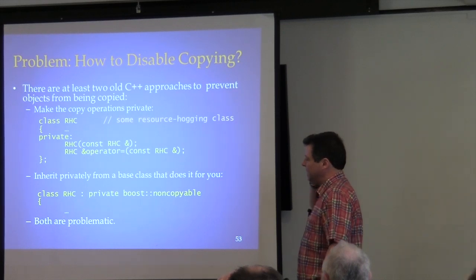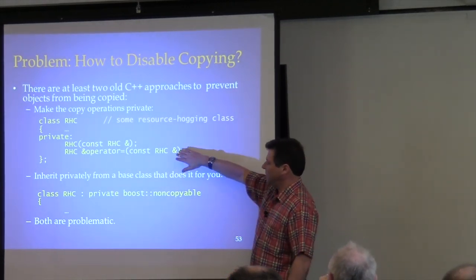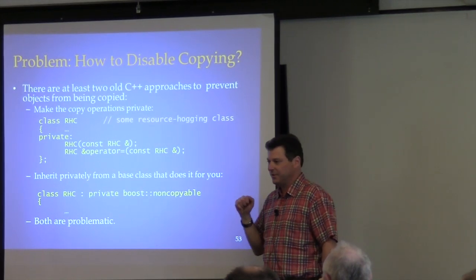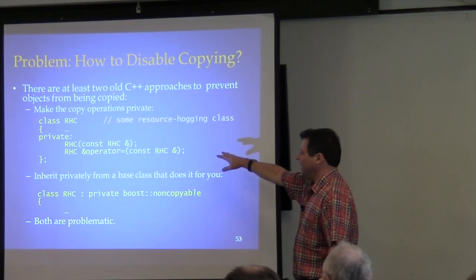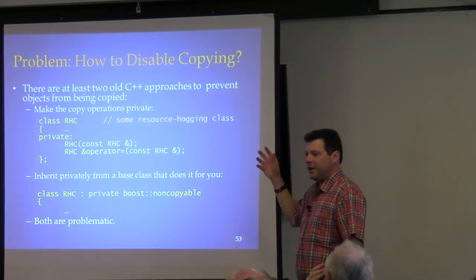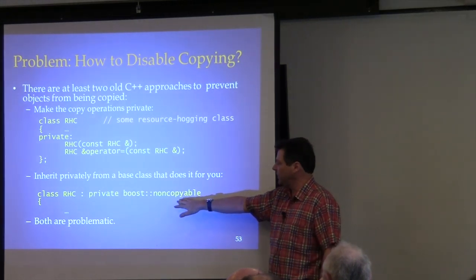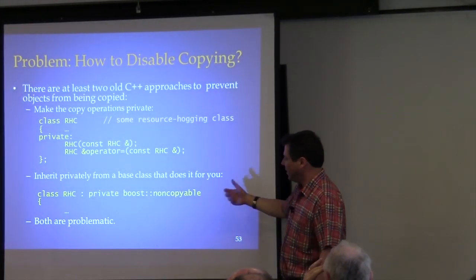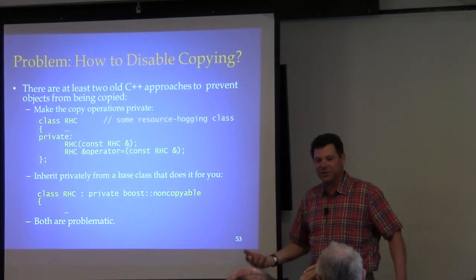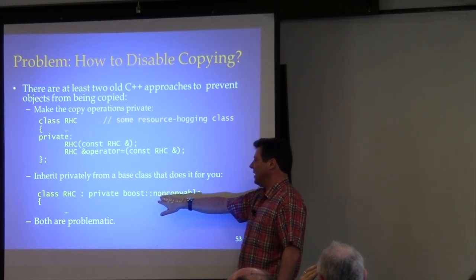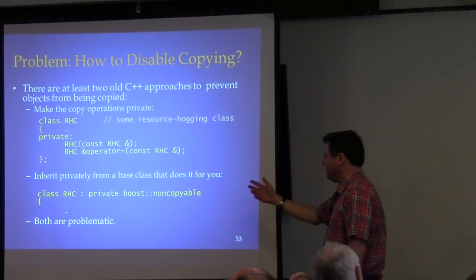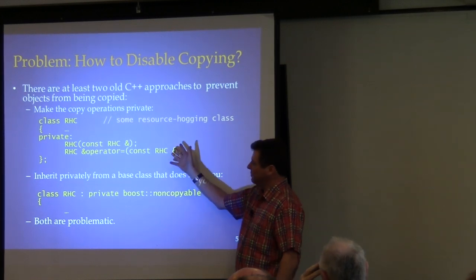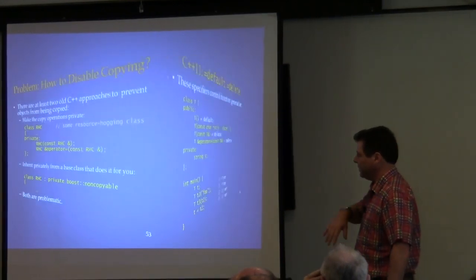Two legacy approaches: number one, declare those copy operations private — the copy constructor and copy assignment operator. They always go together. That works, but it's a little problematic. Another way is to have a base class you can inherit from privately, because this is not an is-a relationship. You use private inheritance, which is an is-implemented-in-terms-of relationship. An example is boost non-copyable. These are not perfect solutions.